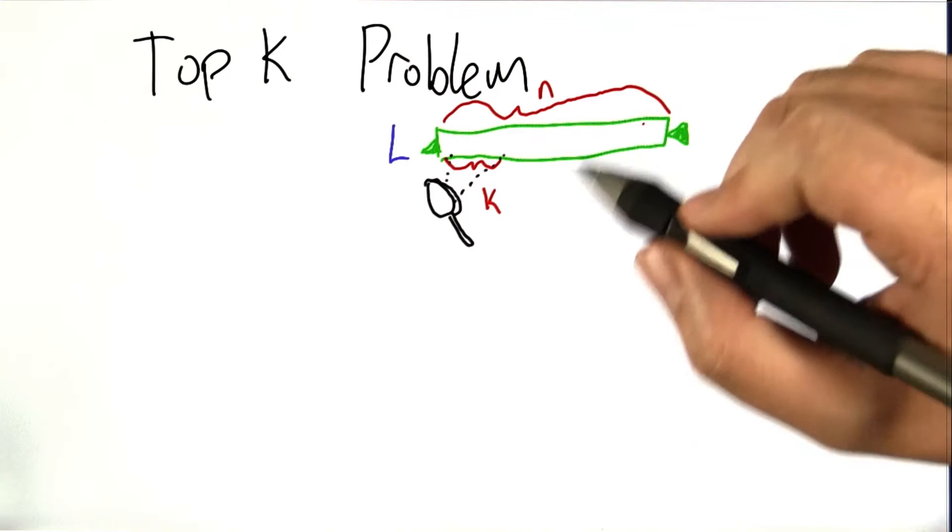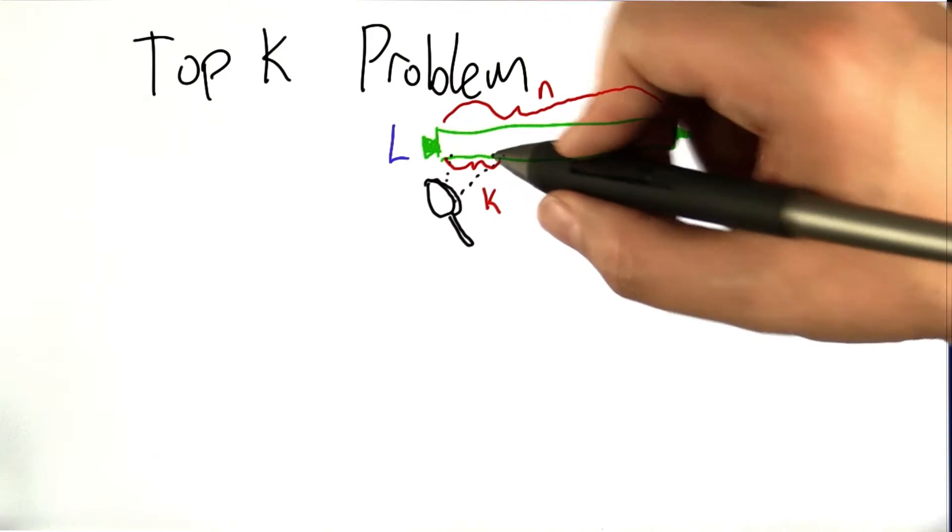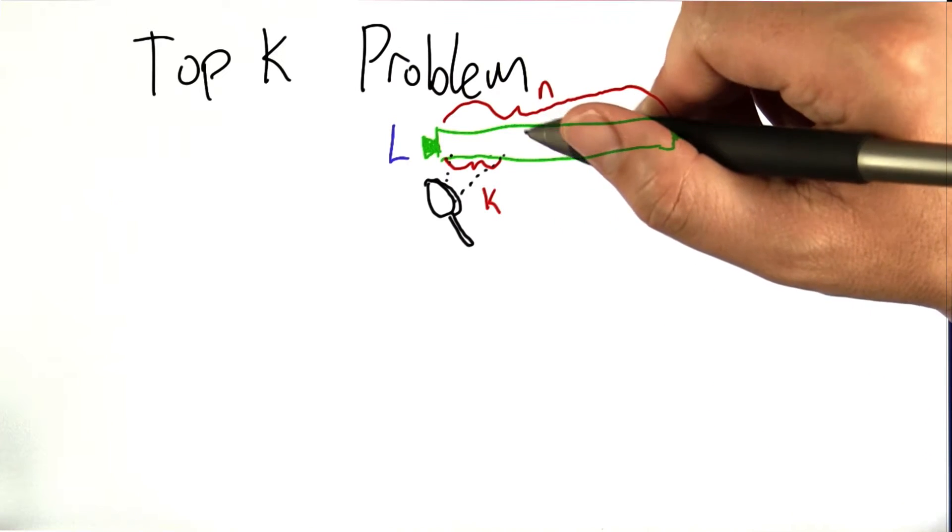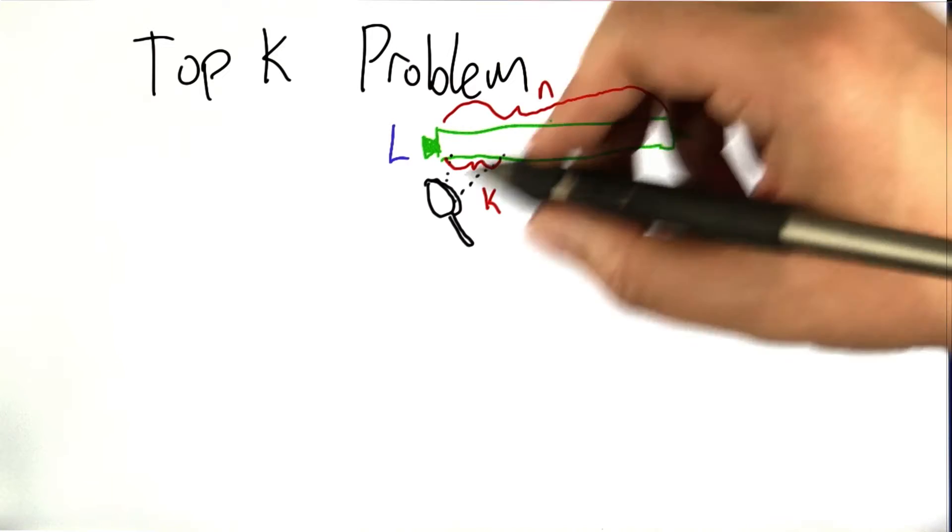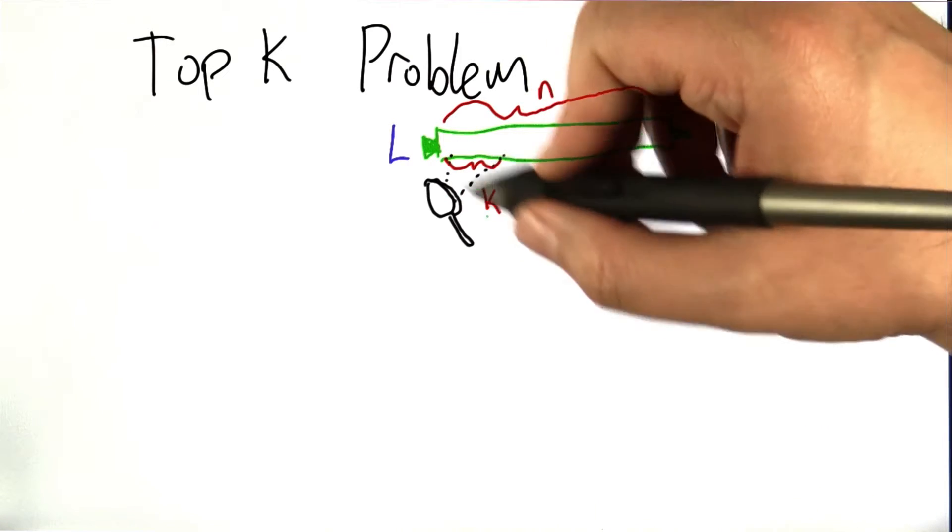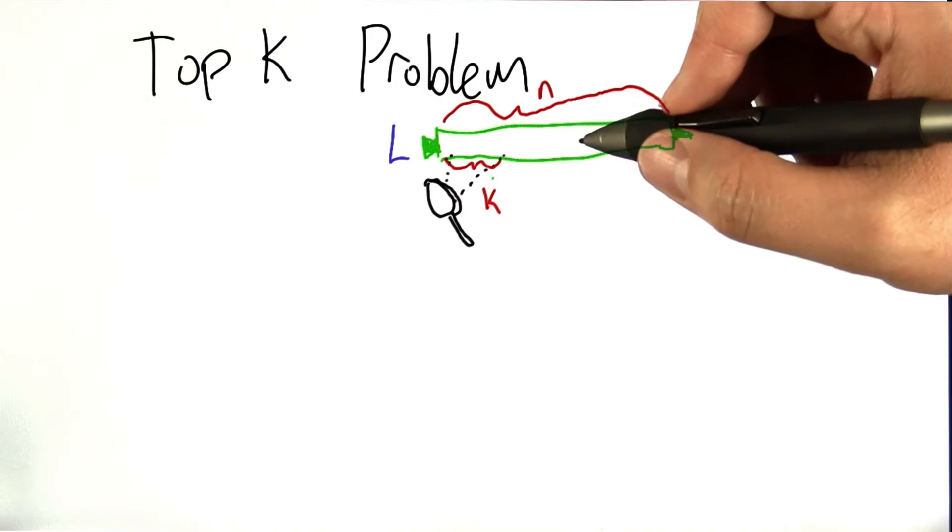It could be the K smallest or the K largest, depending on the particular application that you're considering. But knowing a bunch of the ones near the top instead of just the very tippy top can be very instructive.